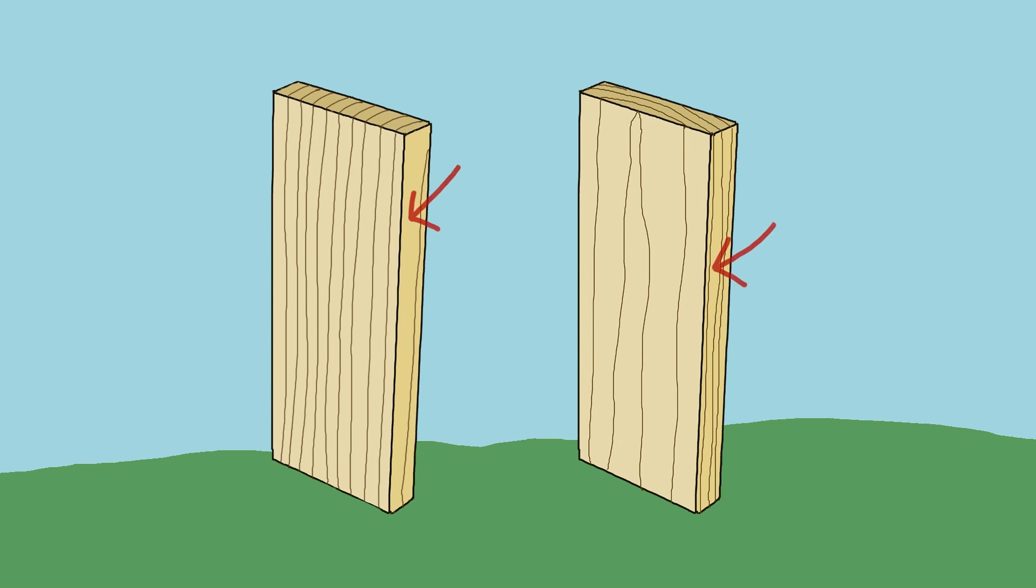The narrower surface with side grain is called an edge. A board has two edges.